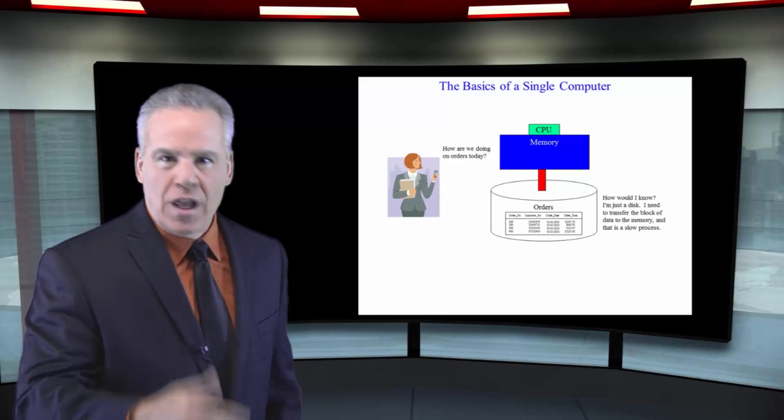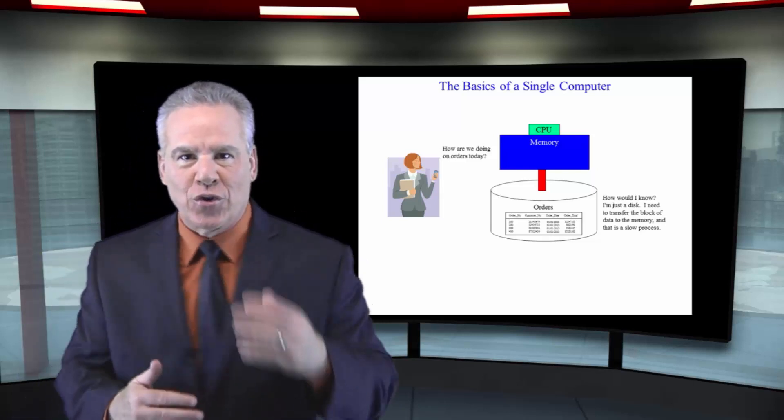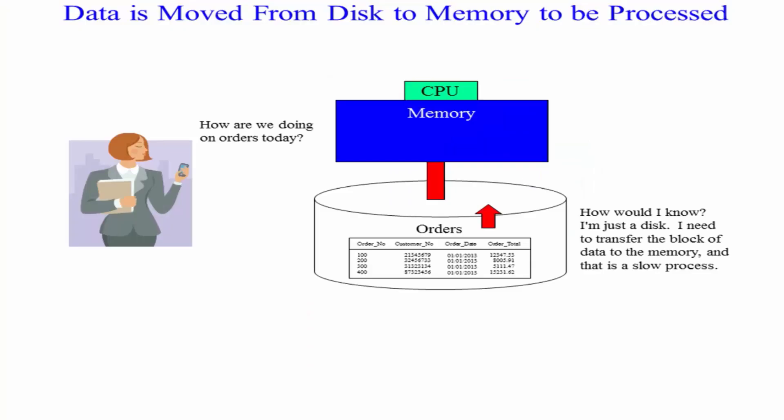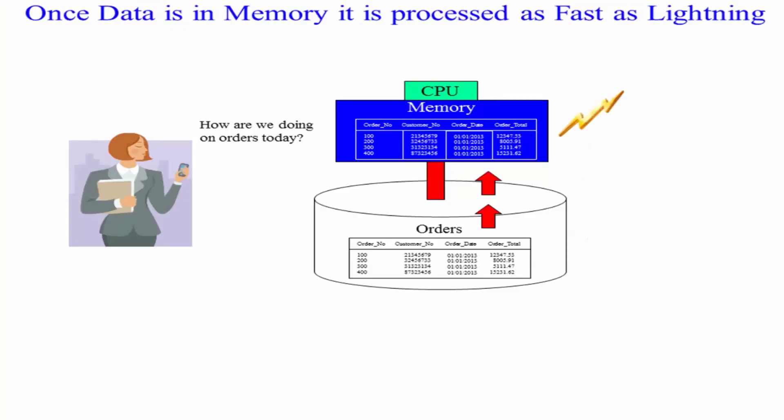If you want to read the data, if you want to update, insert, delete, anything you want to do to that data, they've got to move it from the disk into memory, where like lightning, it is processed. Then they can write it back to disk. And that's how computers work.